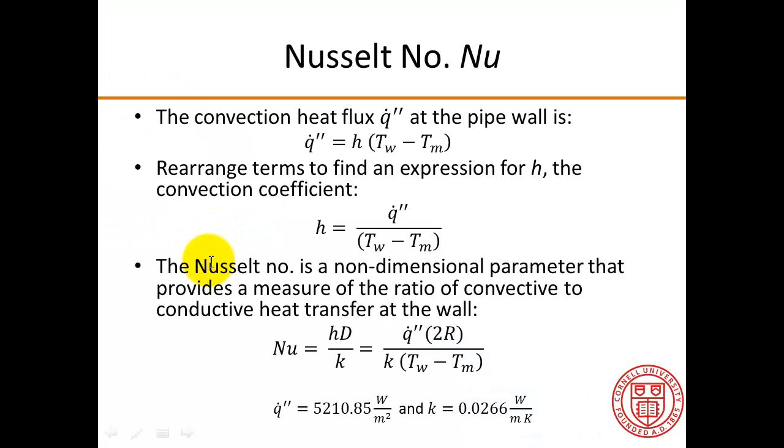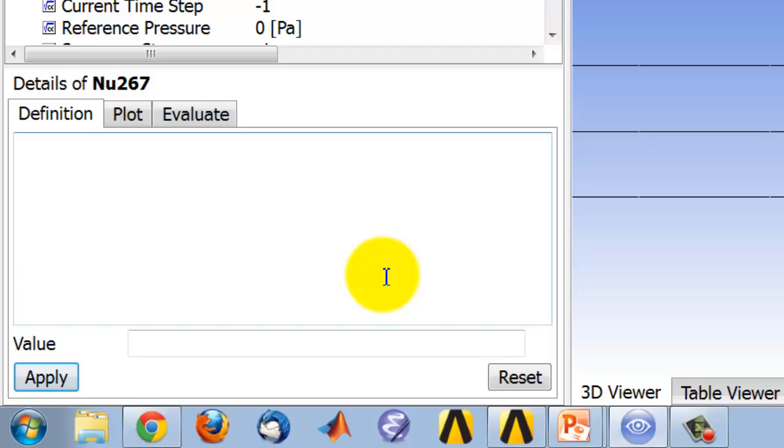And if I look at the expression, so first I have the specified convective heat flux at the wall, which is this value. So 5210.85, and within square brackets, the units.